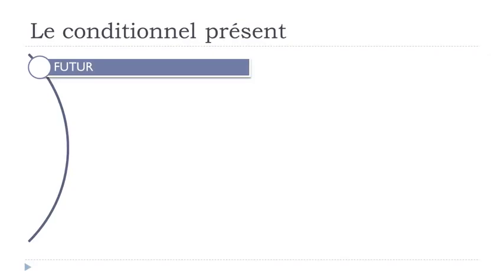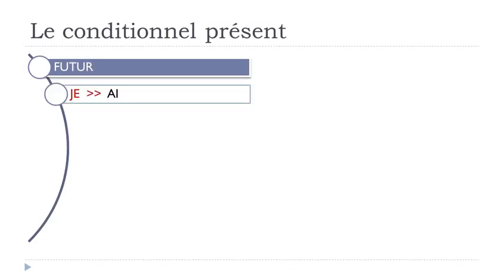Devoir will become 'devr' — nous devrions; venir will become 'viendr' — vous viendriez; courir will become 'courr' — il courrait, elle courrait.